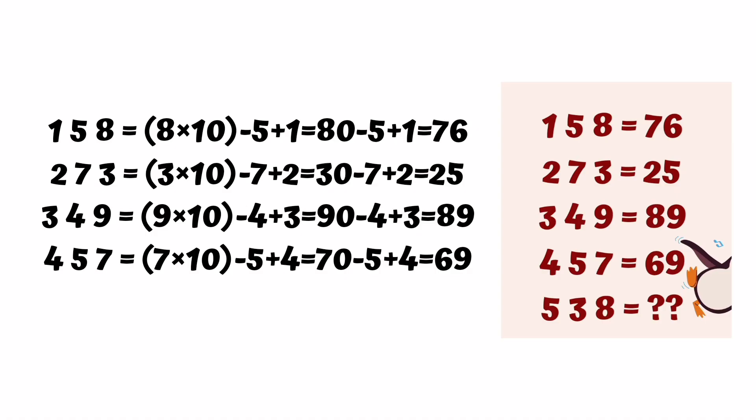First row is 1, 5, 8. It means we have to do 8 times 10 minus 5 plus 1. Then, further solving: 80 minus 5 plus 1 equals 81 minus 5 equals 76.